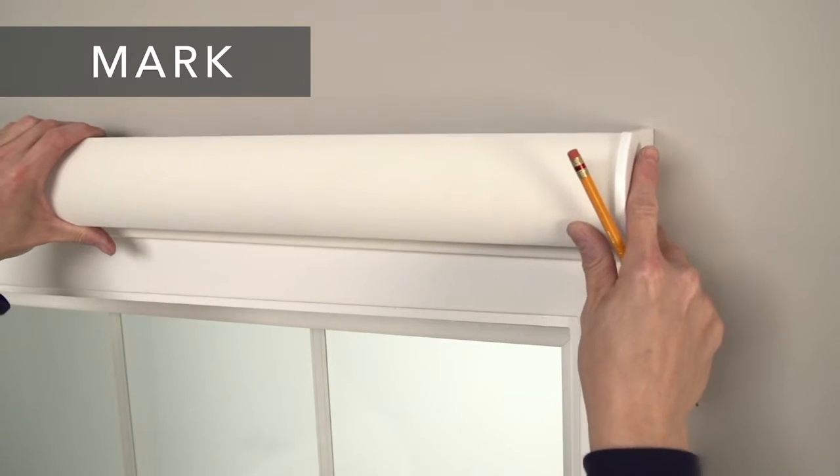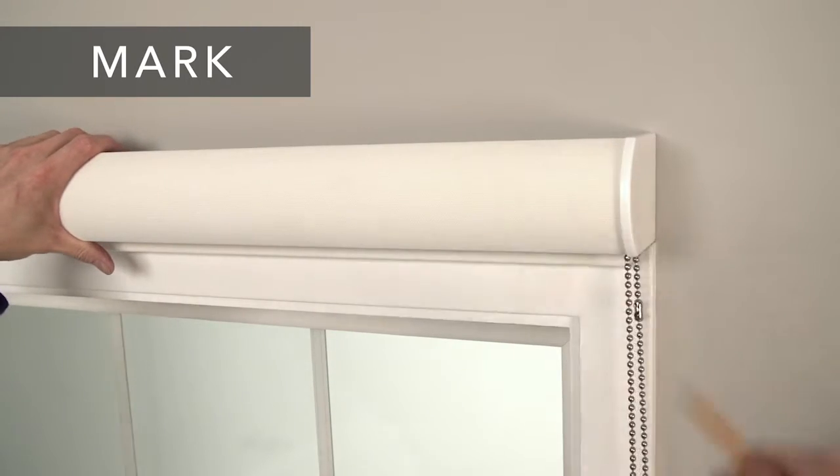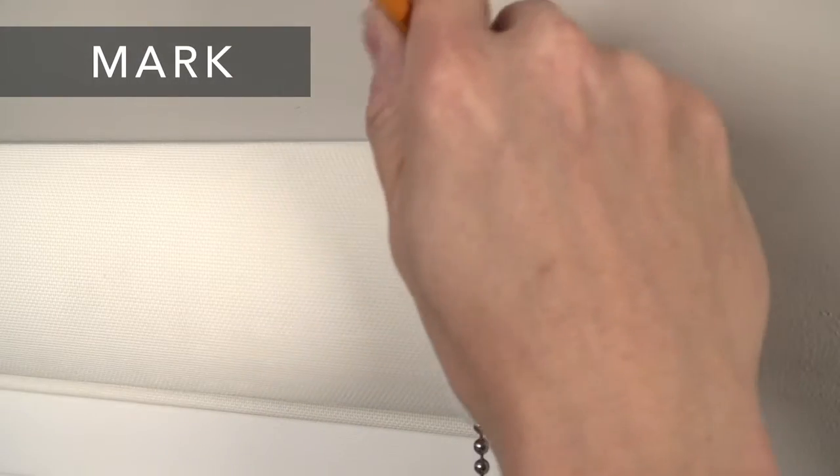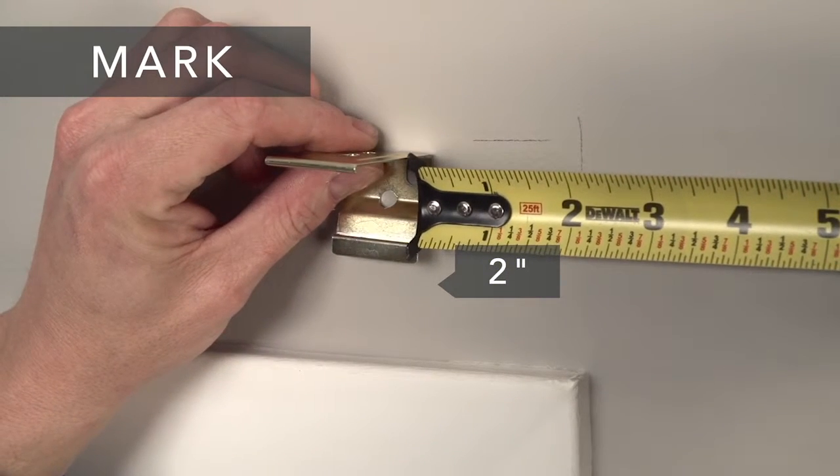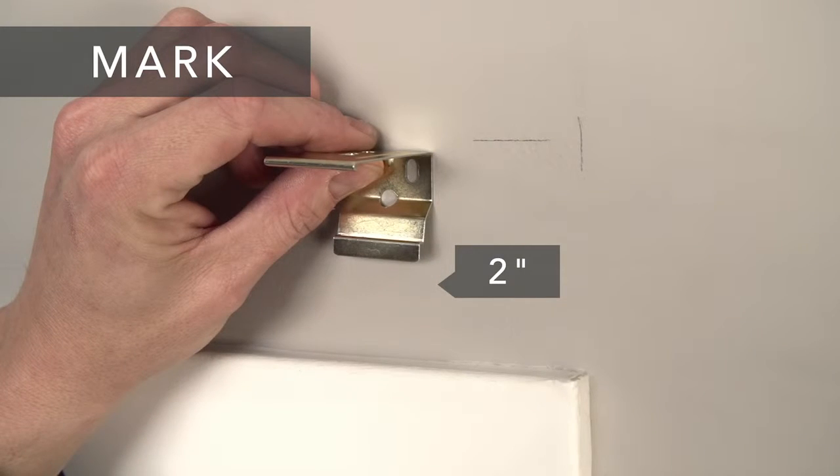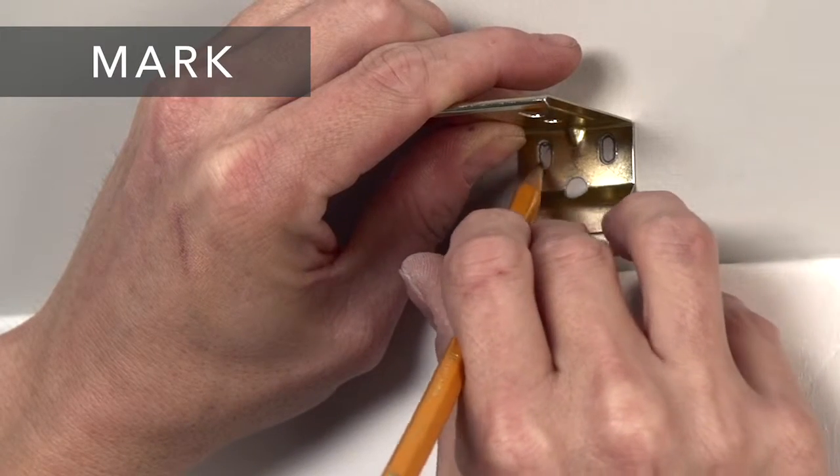First, position the cassette and make sure it's level. Mark the top corners. Measure 2 inches in from each of those marks to position your brackets. Space additional brackets equally. Make sure the brackets are level and then mark the locations for your screw holes.